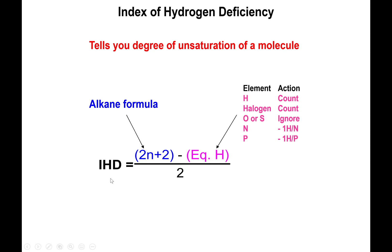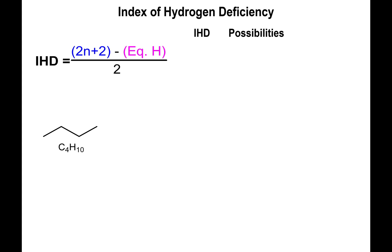For example, looking at C4H10 (butane), we have four carbons. Plugging into the formula: 2×4 = 8, plus 2 = 10. The formula itself contains 10 hydrogens, so we subtract: 10 − 10 = 0, divided by 2 gives an IHD of 0.